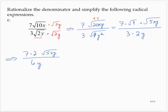Actually, if I just leave that denominator as 3 times 2y, it becomes clear that I can remove that common factor of 2, leaving 7 times the square root of 5xy over 3y.